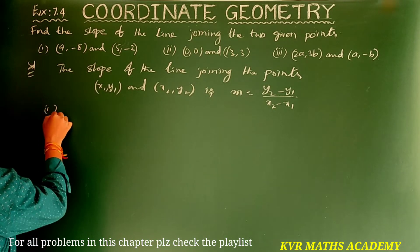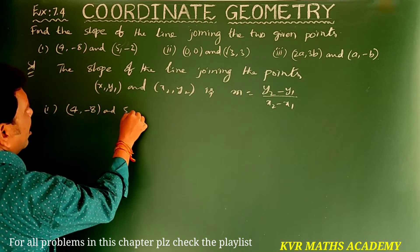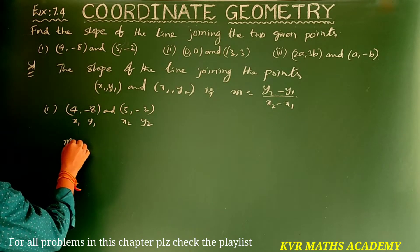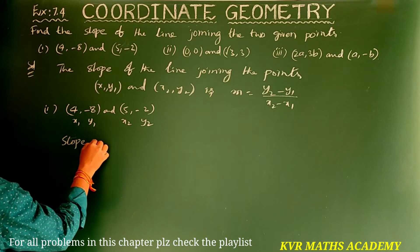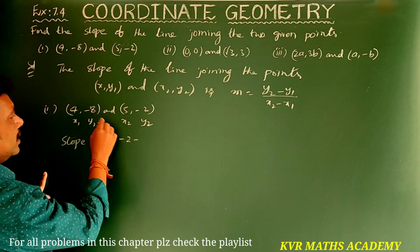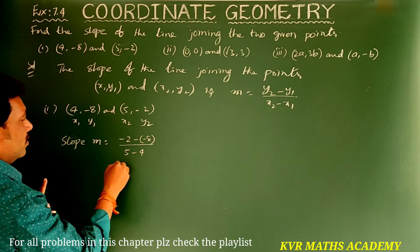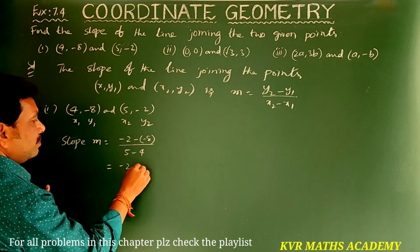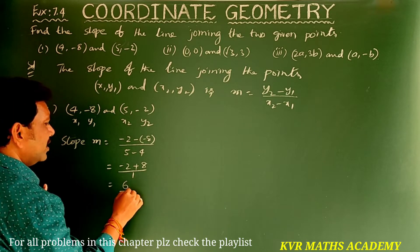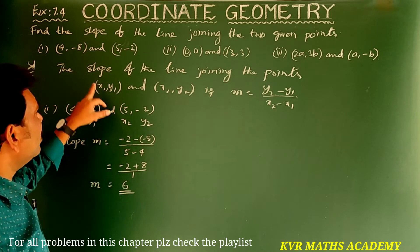Let's take the first one. Given points are (4, -8) and (5, -2). Let us take these as x1, y1 and x2, y2. Slope m = (y2 - y1) / (x2 - x1) = (-2 - (-8)) / (5 - 4) = (-2 + 8) / 1 = 6. So slope m is equal to 6.